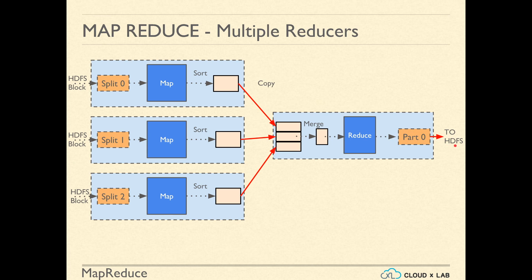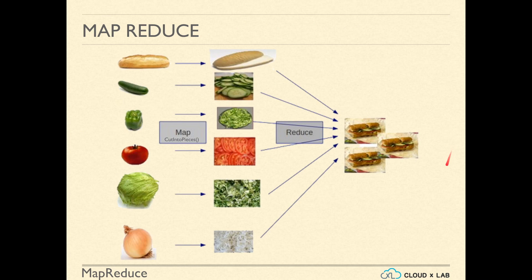Let's imagine for a moment that we would like to prepare a burger on a very large scale. As you can see in the diagram, the function cut into pieces will be executed on each vegetable, and the result will be reduced to form a burger.